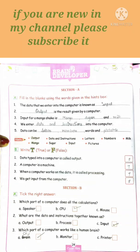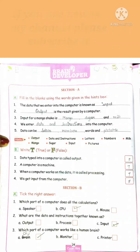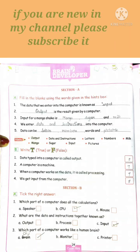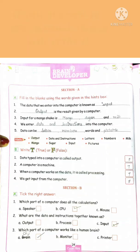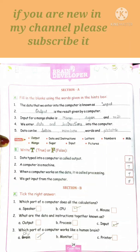Next is tick the right answer. In this you have to give - in three options, among these three options one is right, you have to tick on the correct one. First: which part of a computer does all the calculation? Three options are speaker, CPU, mouse. So correct answer is CPU because processing happens in CPU.